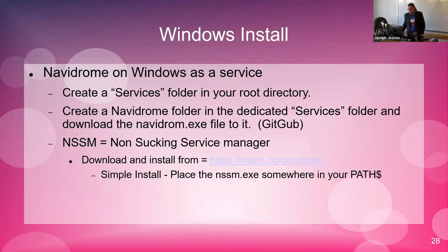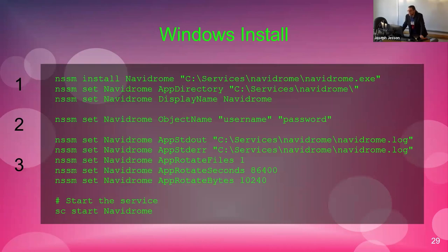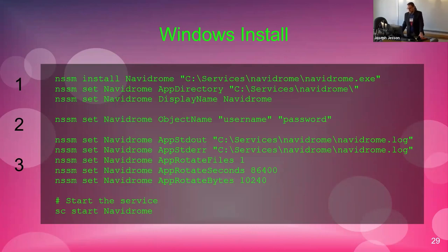You can download NSSM from nssm.cc. You pass a bunch of NSSM commands — once installed — about Navidrome: first telling it where Navidrome is, then giving it some admin rights on your computer so it can run, then setting up logging information, and then you start it in Windows as a service. All of this is on the Navidrome website.